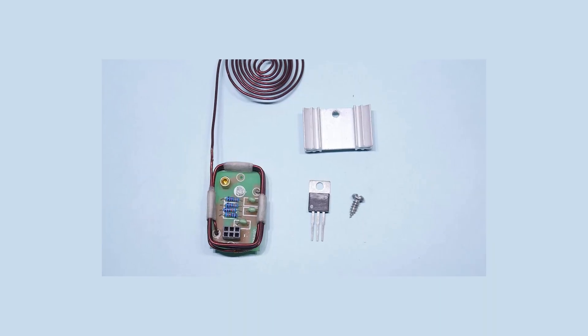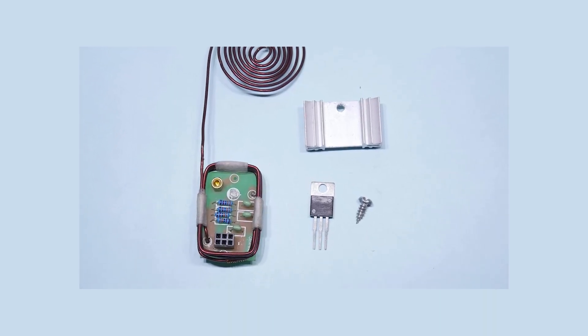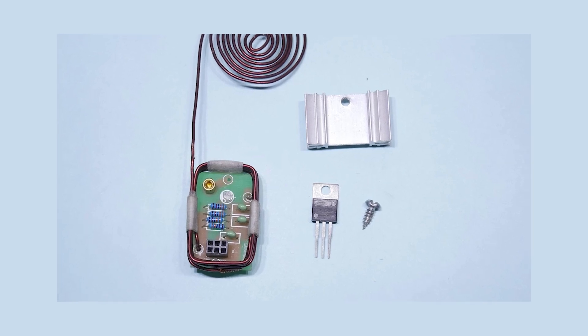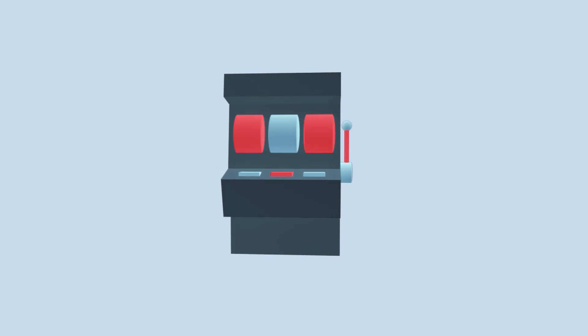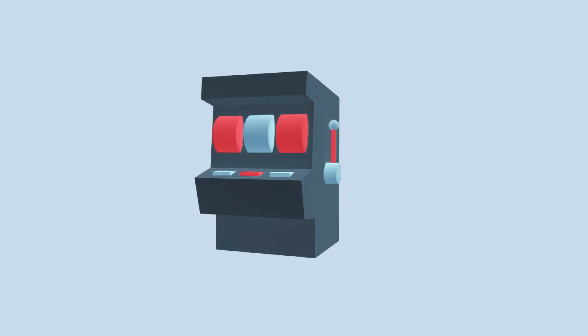A slot machine jammer is an illegal device that some people attempted to use to cheat or interfere with slot machines. Here are some key points about slot machine jammers — again, I'm not encouraging the use of this; this is strictly for educational purposes. These are makeshift electronic devices that supposedly interfere with a slot machine's circuits. The goal is to disrupt the normal functions of the slot machine and trick it into producing winning combinations or payouts.